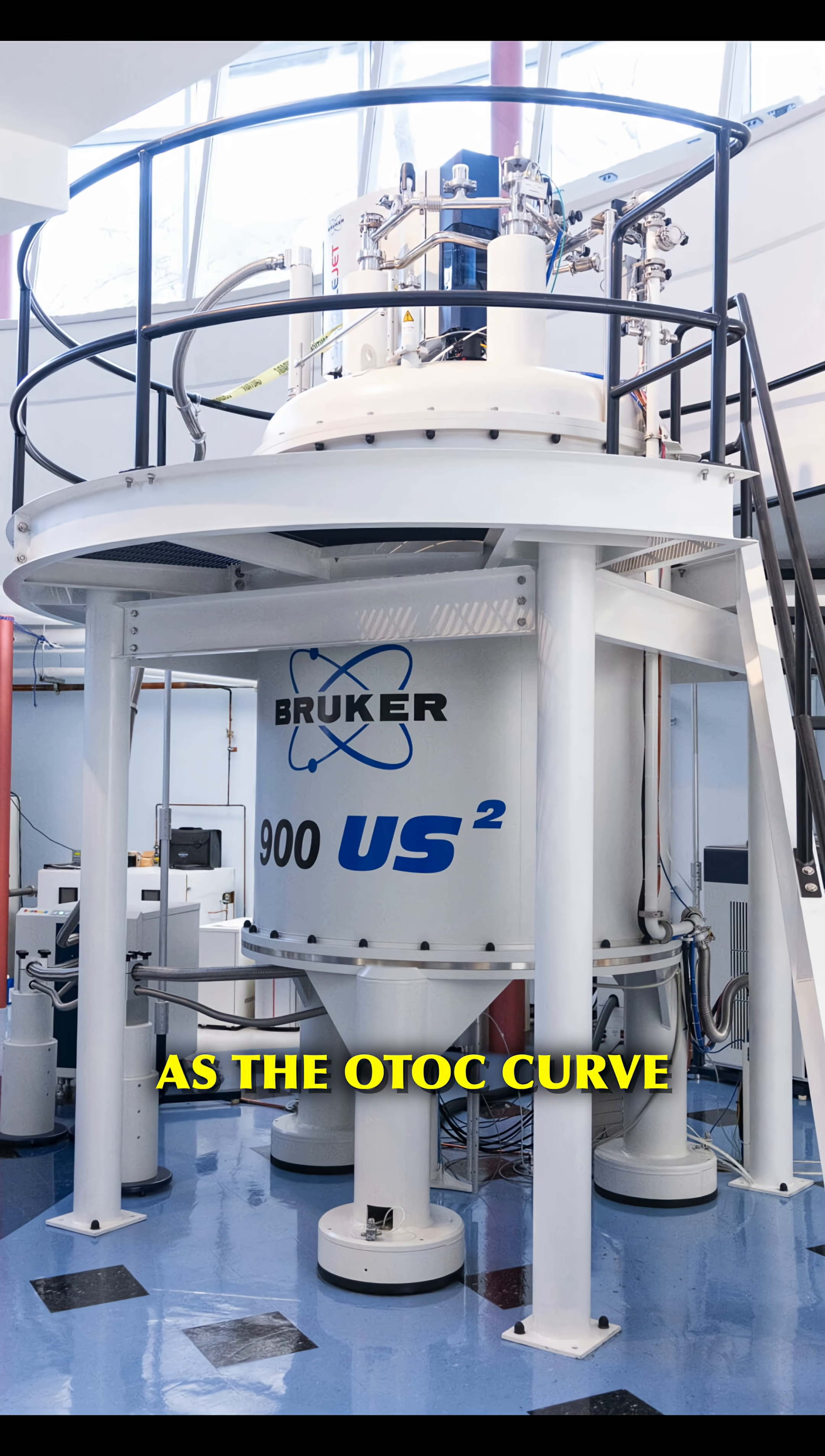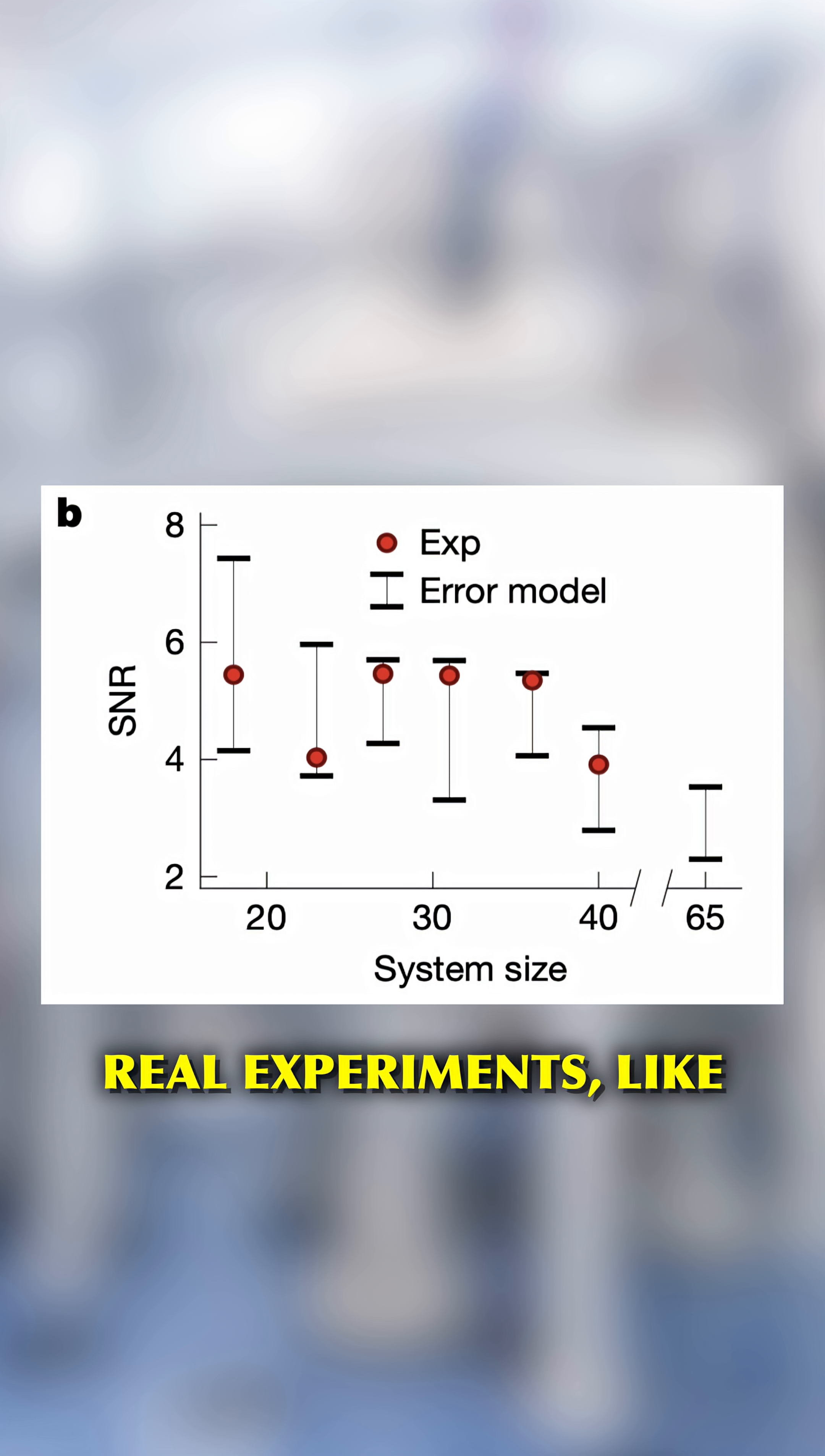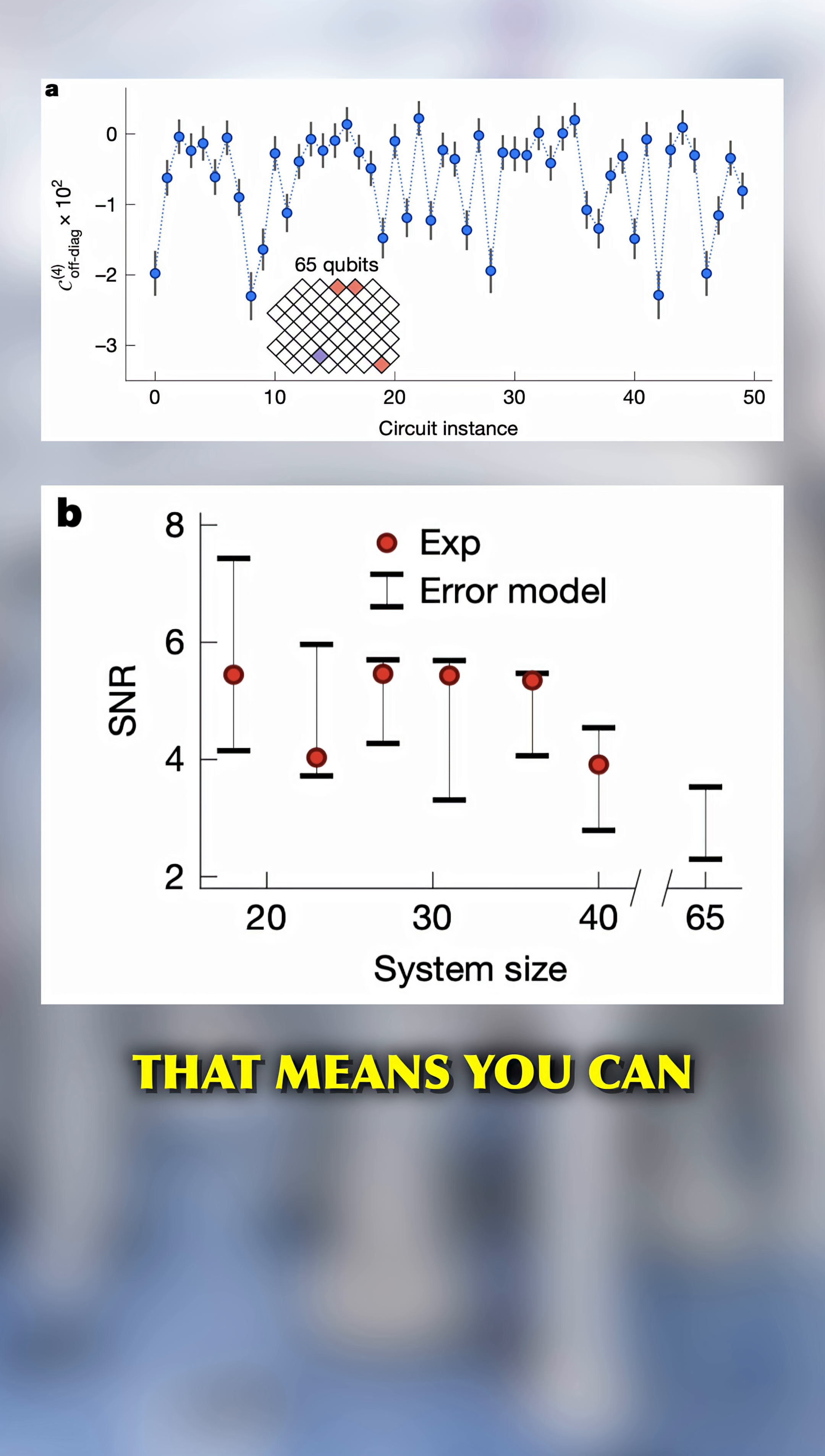As the OTOC curve is a real physical observable, you can measure it in real experiments like nuclear magnetic resonance. That means you can cross-check the Willow results against nature.